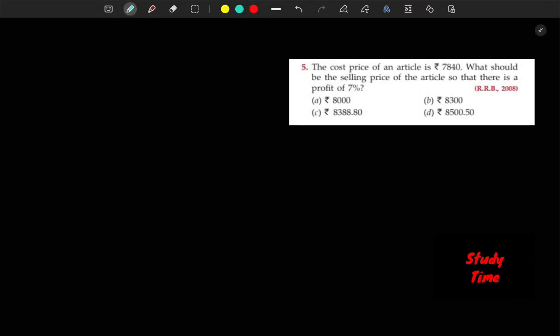Hey hello everyone, welcome back to my channel. Question number 5 here: The cost price of an article is 7840. What should be the selling price of the article so that there is a profit of 7%? RRB 2008 question.